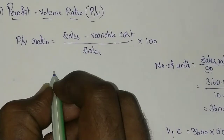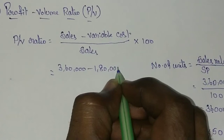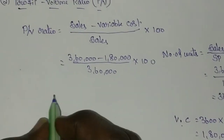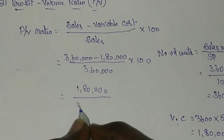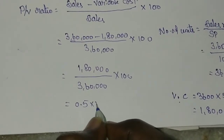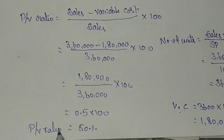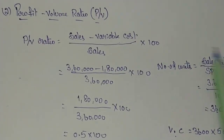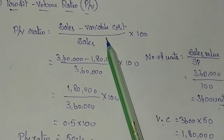Substituting in the PV ratio formula: sales 3,60,000 minus variable cost 1,80,000, divided by sales 3,60,000, into 100. This gives 1,80,000 divided by 3,60,000 into 100, which equals 0.5 into 100, that is 50%. So the PV ratio is 50%. Whenever total variable cost is not given, find total units and multiply by variable cost per unit.